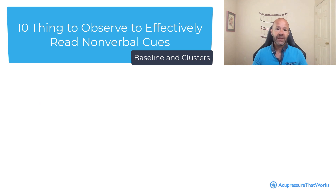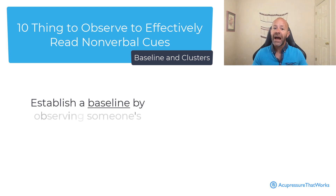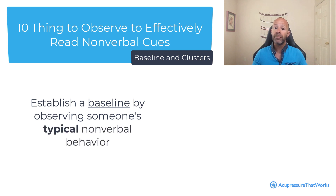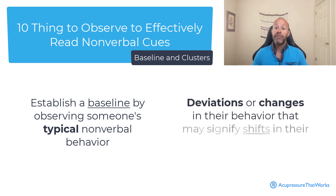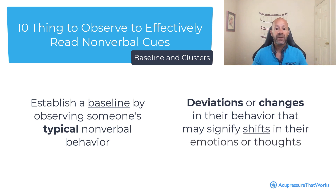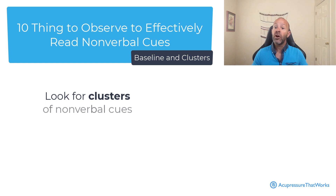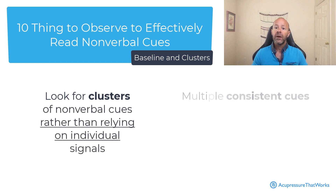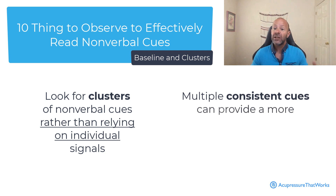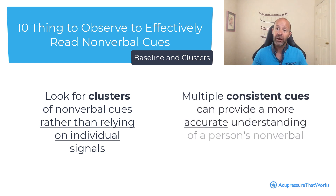Baselines and clusters. Establish a baseline by observing someone's typical nonverbal behavior. This baseline helps you recognize deviations or changes in their behavior that may signify shifts in their emotions or thoughts. Look for clusters of nonverbal cues rather than relying on individual signals, as multiple consistent cues can provide a more accurate understanding of a person's nonverbal communication.